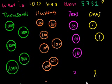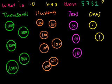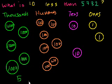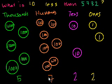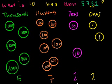What is 10 less than 5,732? That means we take away a $10 chip from our collection. Let me erase one of the tens — that's gone. So now we have 5,700, we have two tens and two ones. So 5,722 is what we get when we take 10 away from 5,732 — we decreased the tens place by 1.